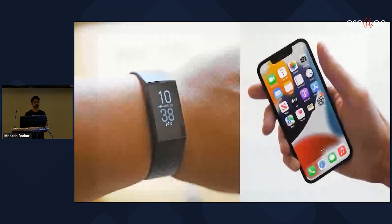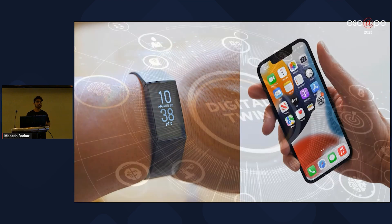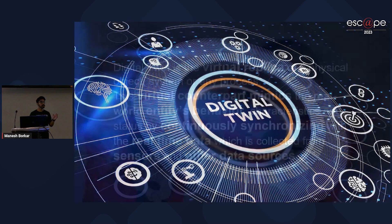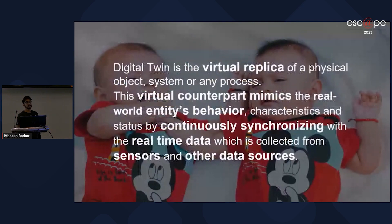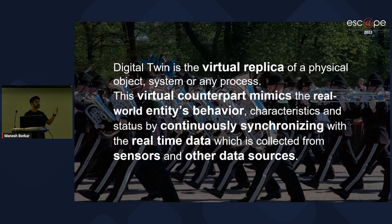Now, just like the example we said earlier about the wearable and the smartphone, we can put together the data and the models of an engineering system and create a personalized model — and that particular personalized model of any engineering system is known as a digital twin. If anyone asks you to define the term digital twin, you should be able to tell them that a digital twin is a virtual replica of any physical object, system, or any process. And this virtual counterpart mimics the real-world entity's behavior and status by continuously synchronizing with real-time data collected from sensors and other data sources.